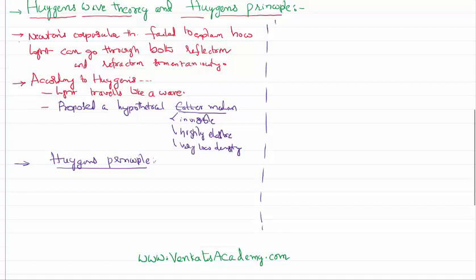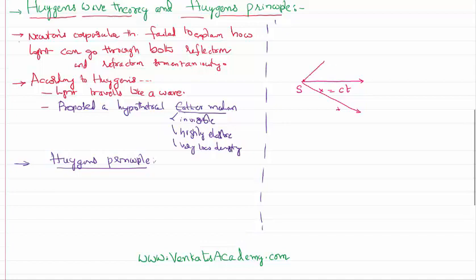Let us consider a point source. Light travels with a constant velocity — say 3 × 10⁸ meters per second. In a given time, light travels a distance x = c × t in one direction, and the same distance in all other directions simultaneously.